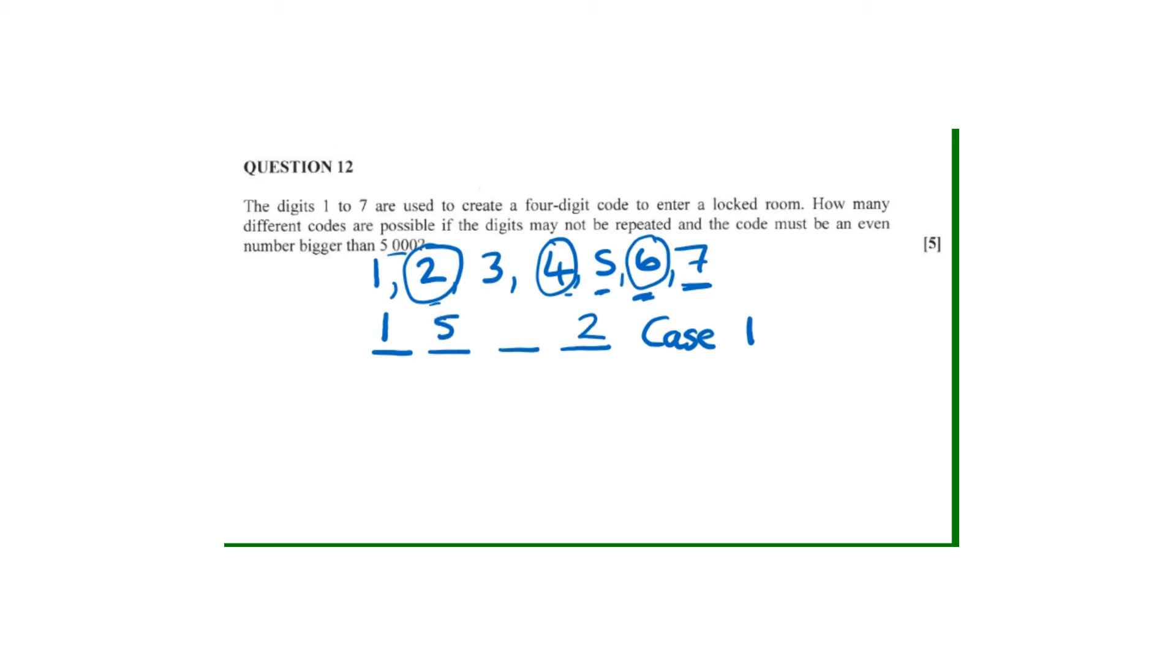Then here we can now have 5, repetition is not allowed, then this can be 4. So which means it will be 1×5×4×2. So with Case 1, 5×4 that's 20 times 2, we have 40 possibilities. Then we shall go to Case 2.